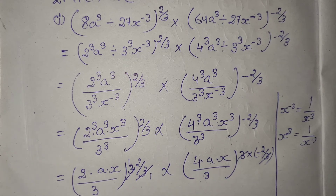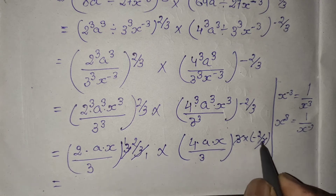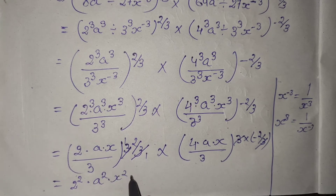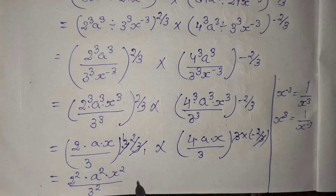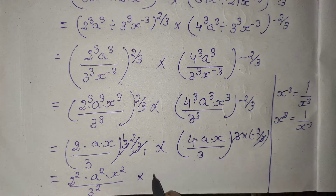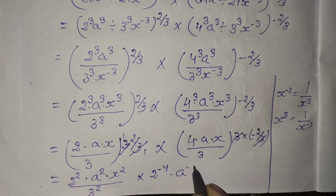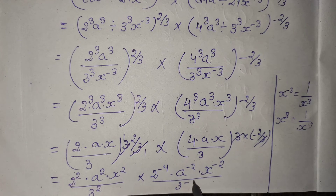So what do we get? Look at this — here is power 2, and here is power 2, here is power 2. So we put it all together — this is power 2, and here is minus. If it is minus, what happens? We get 2 power minus 4. Then here is a power minus 2, then x power minus 2. Upon 3 power minus 2.